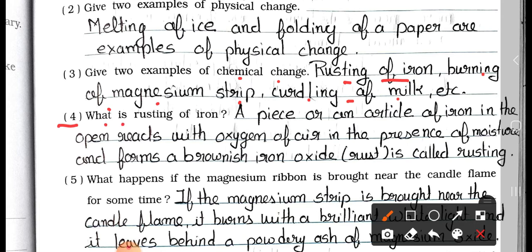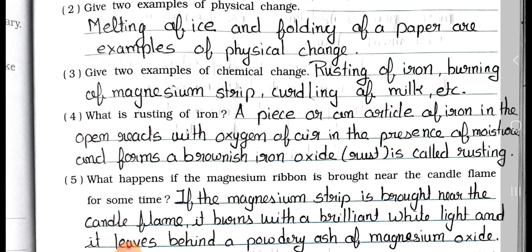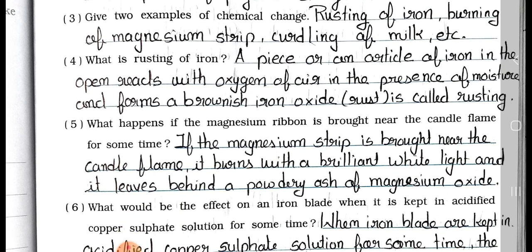Question number 4: What is rusting of iron? Answer: A piece or an article of iron in the open reacts with oxygen of air in the presence of moisture and forms a brownish iron oxide — this is rusting of iron.